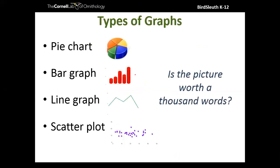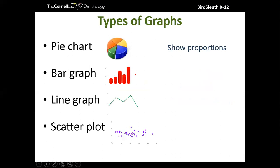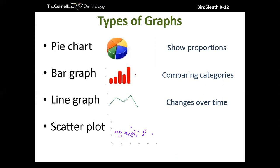There are several types of graphs kids will use: a pie chart shows proportions up to 100%; a bar graph compares different categories; a line graph shows change over time — that time factor is very important; and a scatter plot looks for trends rather than something over a period of time. The graph should share the story you're trying to tell.